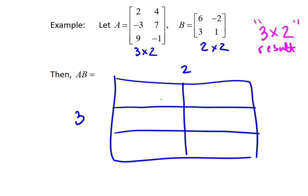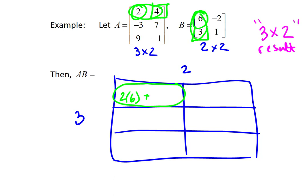To get the top left entry of our result — in green — that's top left, so it comes from the top row times the left column. We multiply 2 times 6, then add 4 times 3. Moving on to the middle row of the left column, we use the middle row of the first matrix times the left column of the second. These colors are going to get chaotic, so I'll only do a couple with colors to illustrate it.